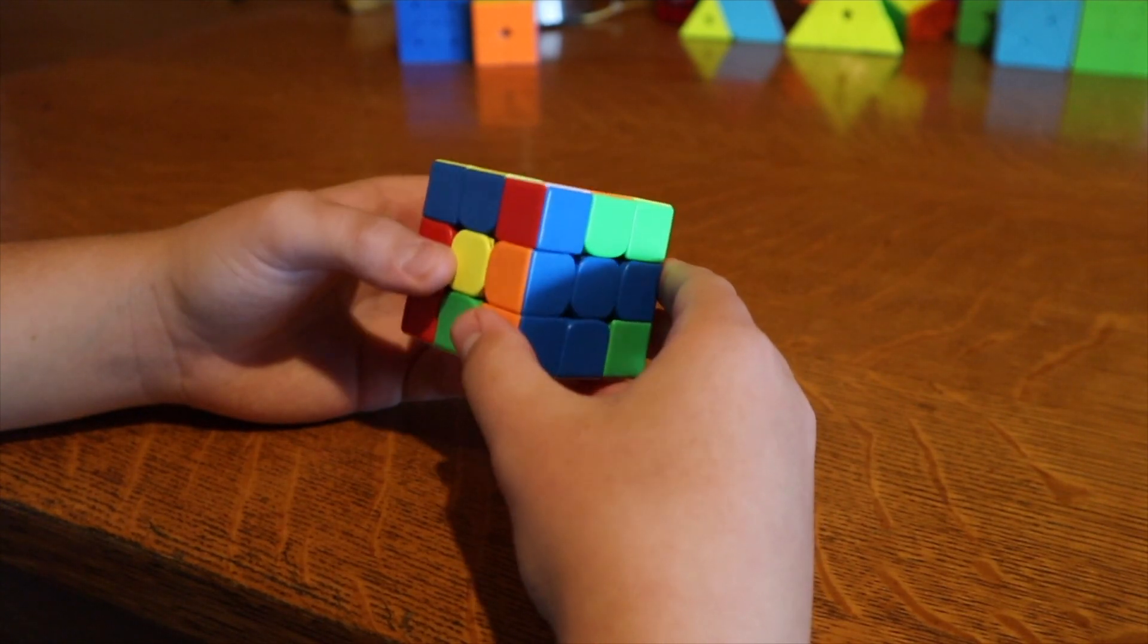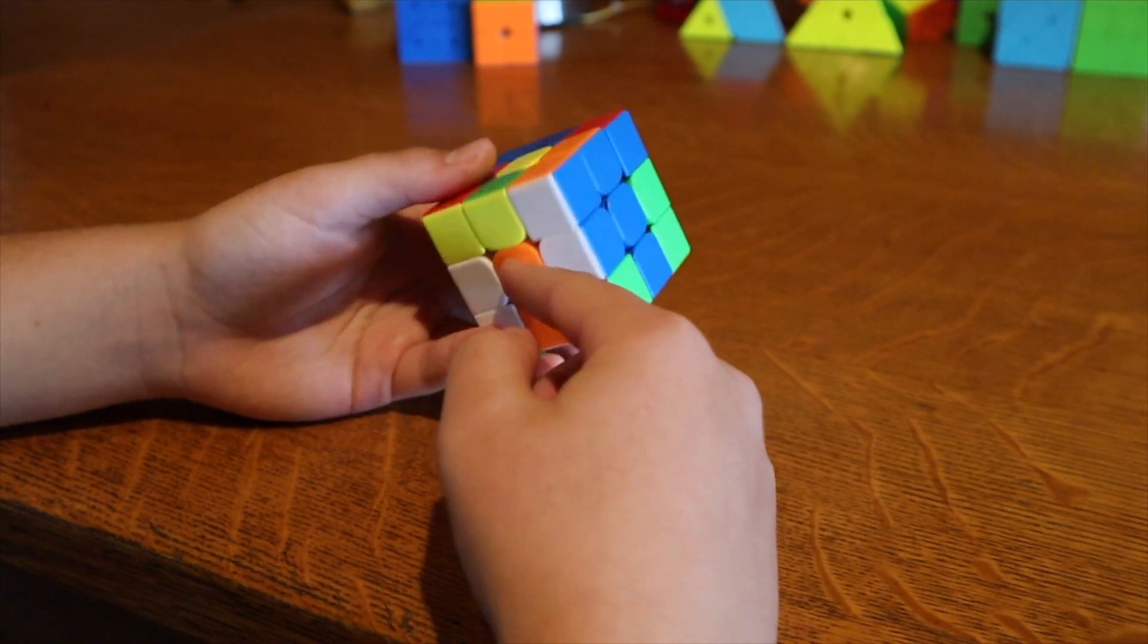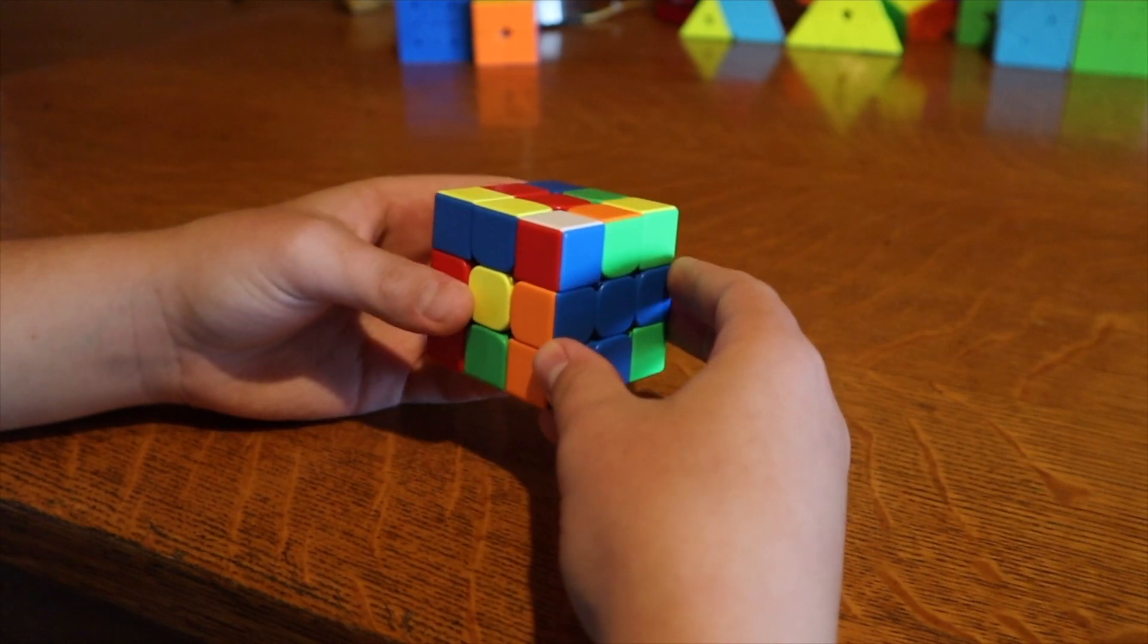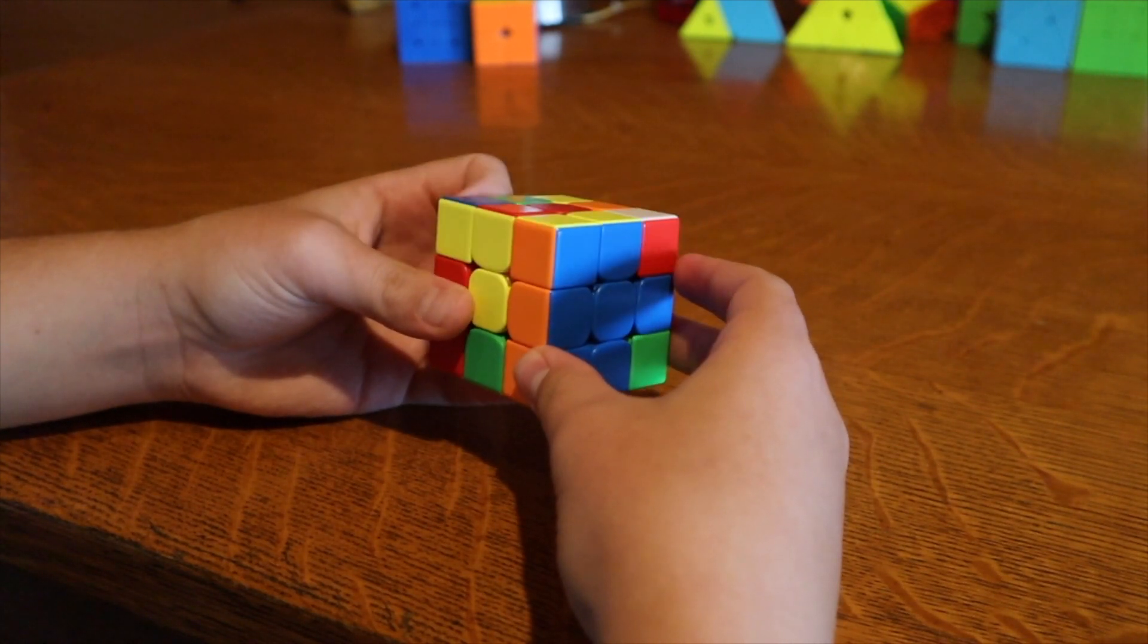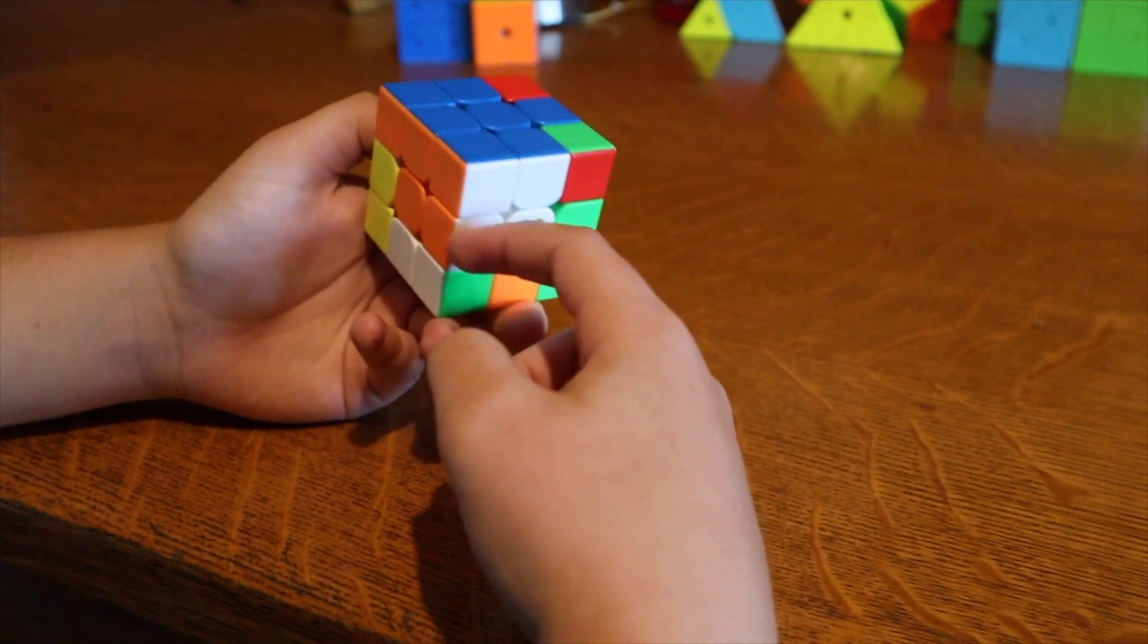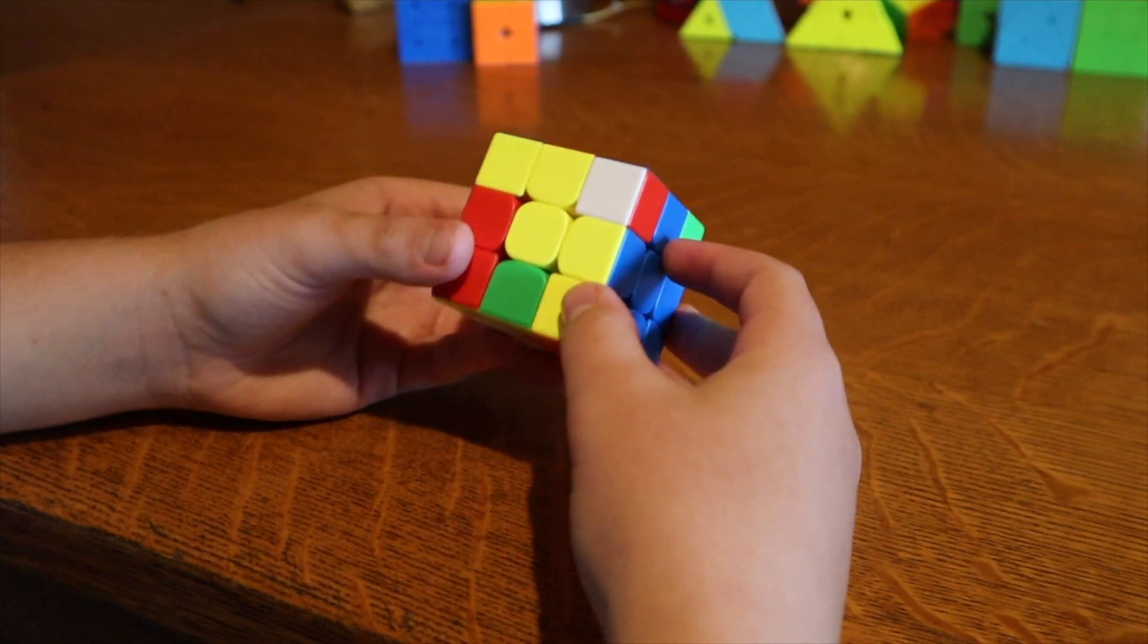So here's my solution. I put orange on the bottom and yellow on the front. So like I said, if you do U prime and R prime you have this giant double x-cross except for this orange edge piece.